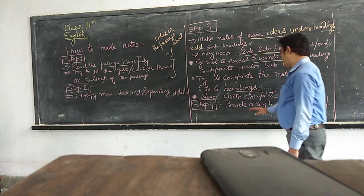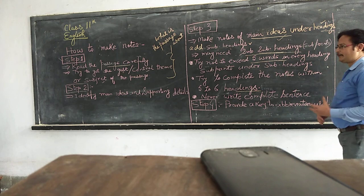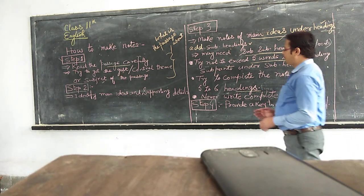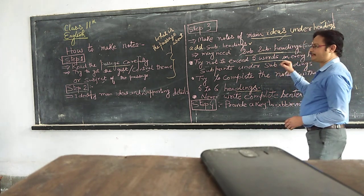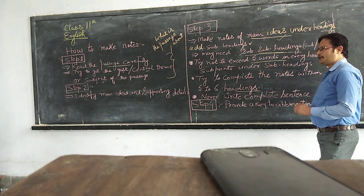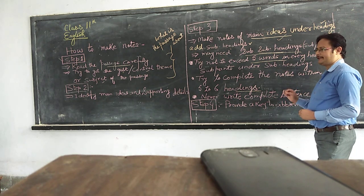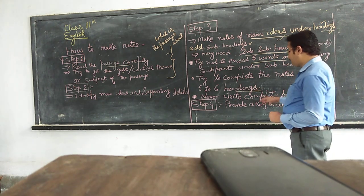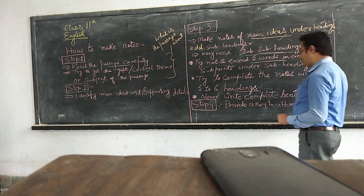In step 4, provide a key abbreviations list. What are the abbreviations? Suppose you are writing the word industry and you want to make it shorter using abbreviation I-N-D-S. So at the end of the notes, you have to provide the key abbreviations used.